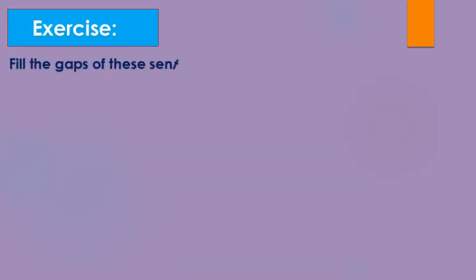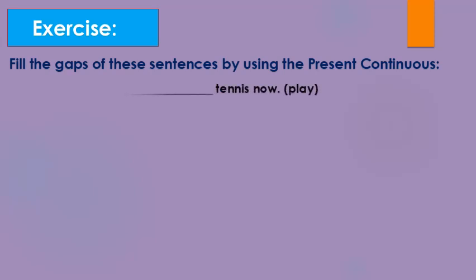Now let's move to the exercise. Fill in the gaps of these sentences using the present continuous. We have an example: Number one — Ahmed and I __ (play) now. The keyword is 'now', and 'Ahmed and I' is plural, so the auxiliary is 'are'. Answer: 'Ahmed and I are playing.'